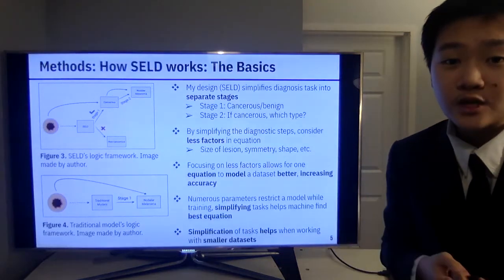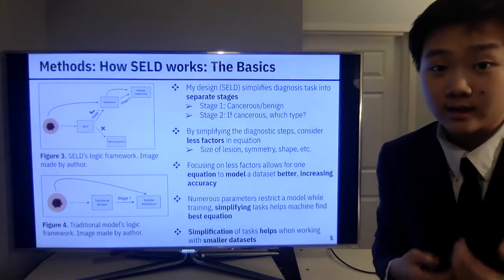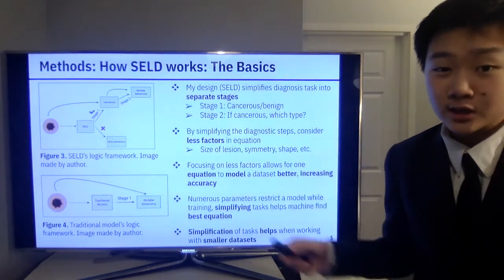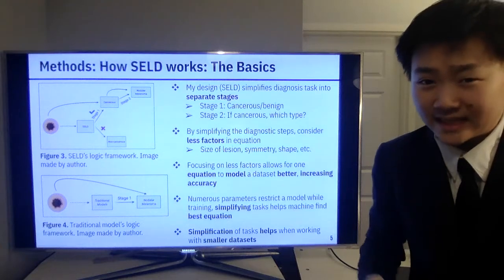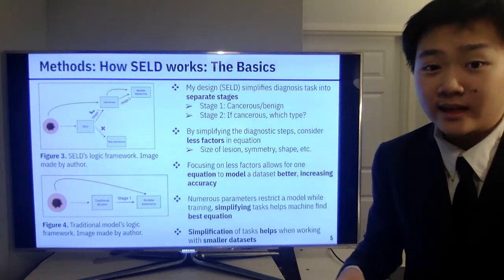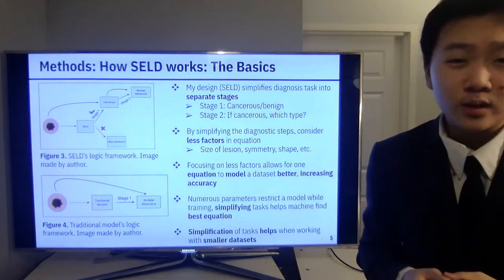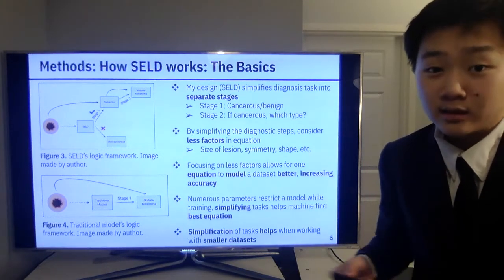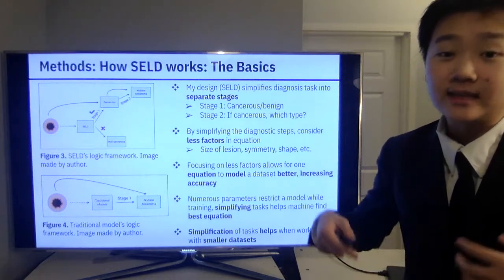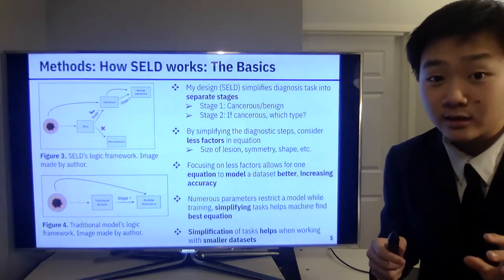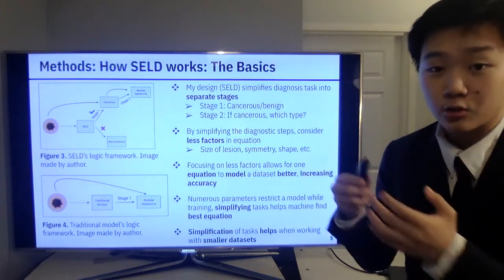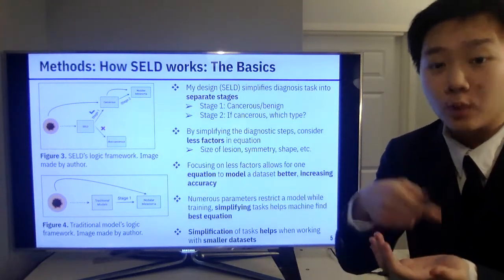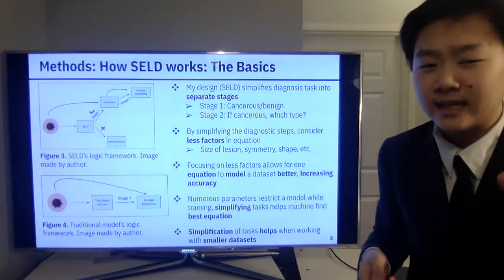So with that information, let's look at why my model is hypothesized to be more accurate than traditional ones. The bottom image shows the logic framework of traditional models: input an image of a skin lesion and in only one step classify what type of skin cancer it is. Whereas, looking at the top image, my model CELD simplifies this diagnosis task into two steps. First, CELD classifies whether the lesion is cancerous or benign, and if it is cancerous, the model further differentiates what type of skin cancer it is in stage two.